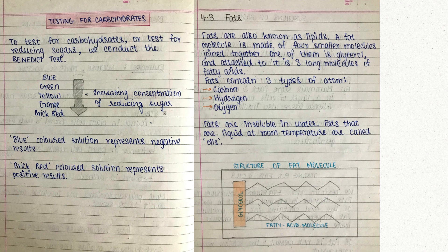Starch can be found in plant cells — mainly it is stored in the seeds and tubers of plants. Cellulose is found in plant cell walls and glycogen is found in animal cells. Most polysaccharides are insoluble and they do not taste sweet.